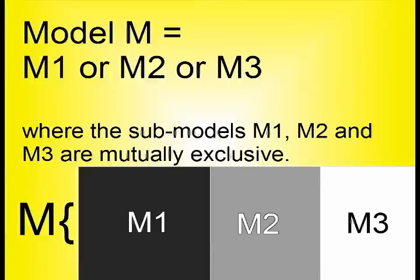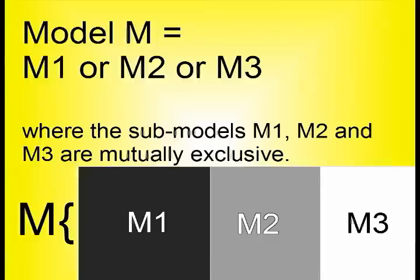So a model is really a family of smaller sub-models. Let's call the unobserved big model M, and the smaller components M1 to M3, which are the sub-models. We also allow ourselves to contemplate that there are models outside of the big model M — let's call that collection N, which is simply not M.